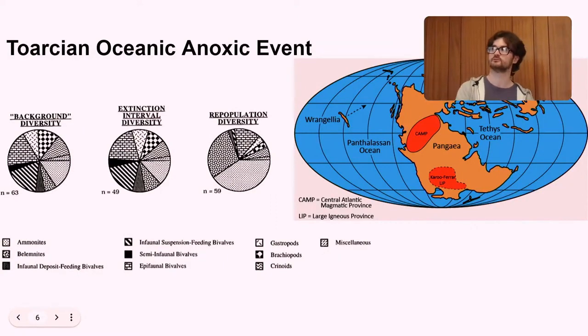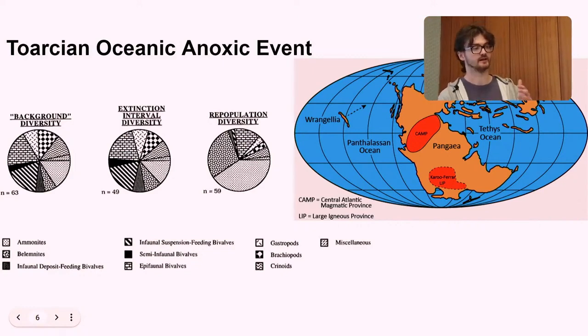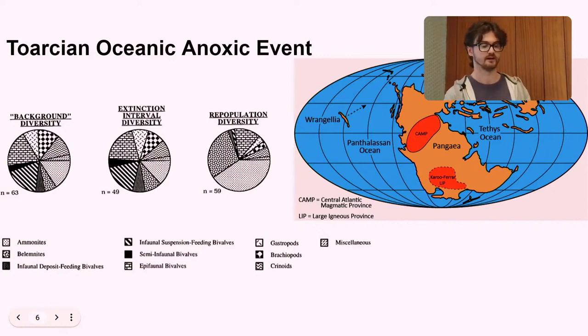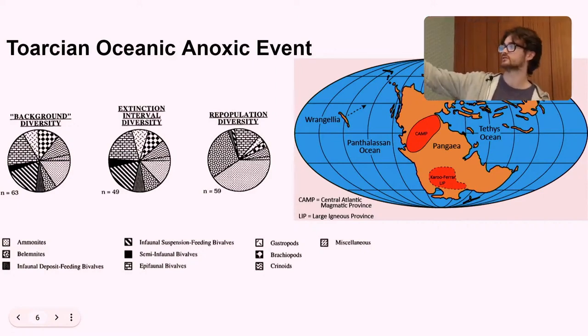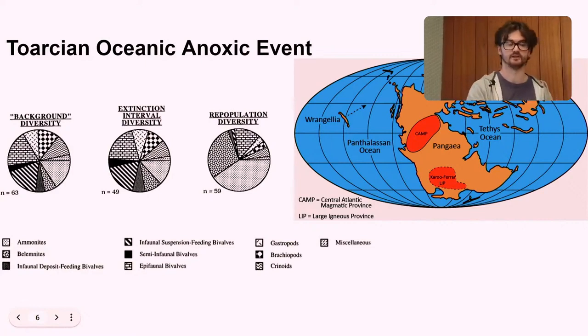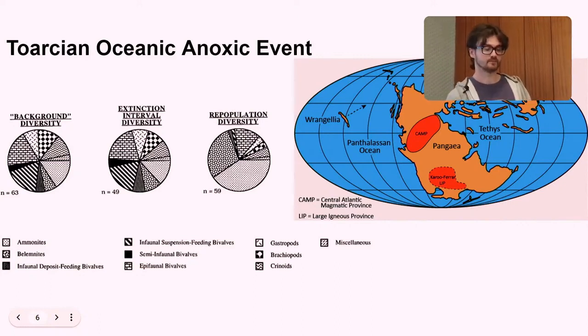Something else that's worth mentioning about Strawberry Bank is that it was deposited at the same time as this, the toarcian oceanic anoxic event. So this was a time when there was a lower amount of oxygen in the water compared to usual. It's been linked to the Karoo Ferrar large igneous province formation, basically a massive volcano forming on Gondwana. So what is now South Africa, Antarctica and Australia. As a side note as well, this CAMP, the Central Atlantic Magmatic Province, that's already underway by this point. And that will open up to form the Atlantic.